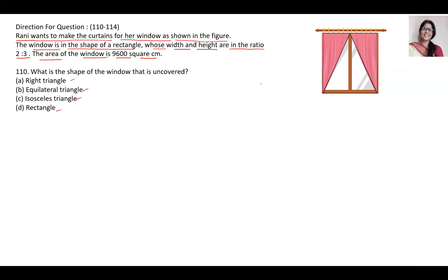So this is very colorful but it is very easy question. In the figure it is clearly visible that the uncovered area is just this white one. So it is an isosceles triangle. C is the answer - the uncovered area where the screen is not there.